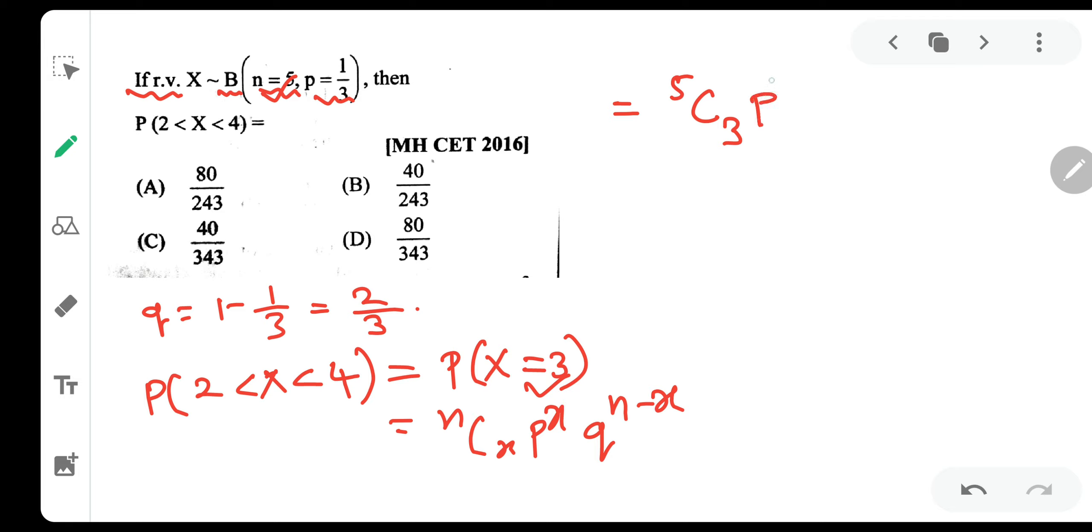So p cube, because they want success three times. Now out of five trials, three times you want success, so two times it will be failure. Very simple.